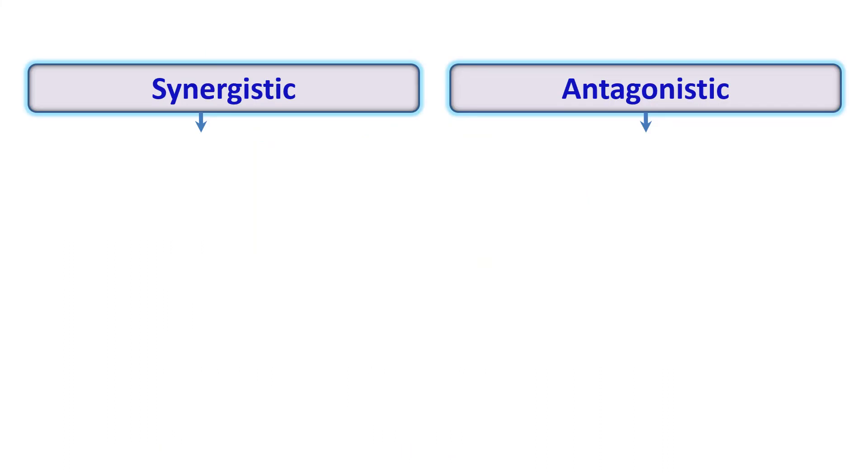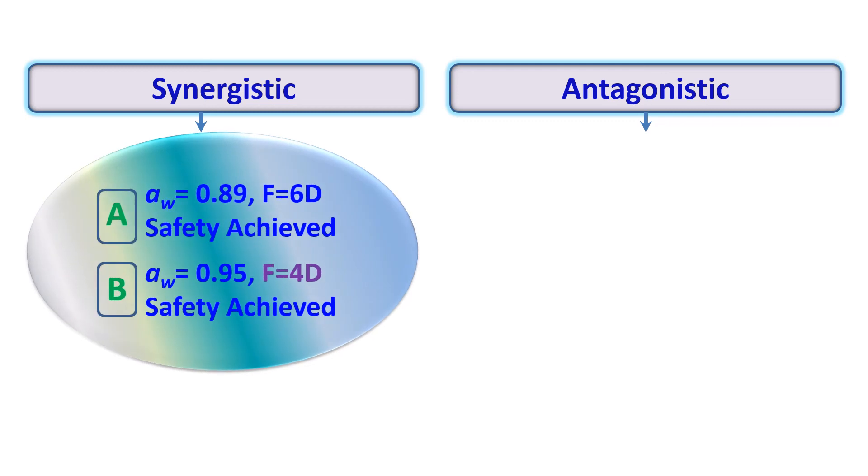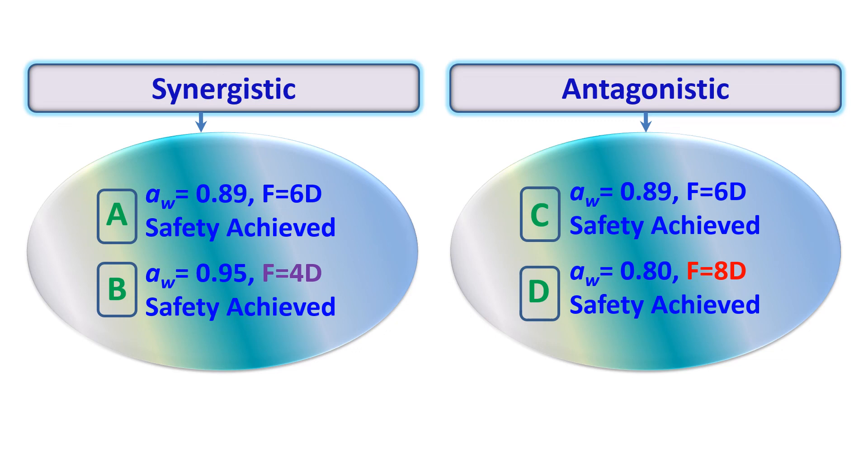In this slide, I would like to provide one example of synergistic and antagonistic results when heat treatment is used at different water activities. We could have synergistic result of heat treatment if we increase water activity from 0.89 to 0.95, since more heat is required to kill bacteria at lower water activity. Therefore, we could achieve the same safety with an F value of 4D instead of 6D. However, heat treatment process could be antagonistic if we reduce water activity from 0.89 to 0.80.